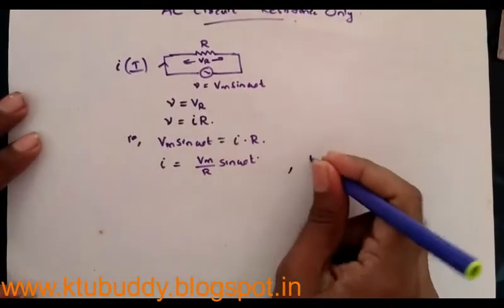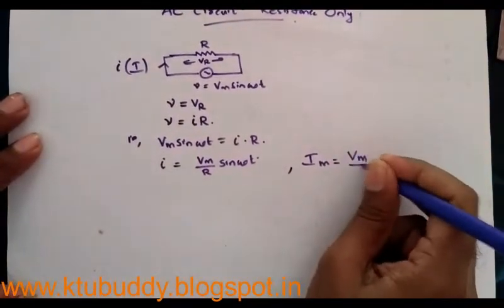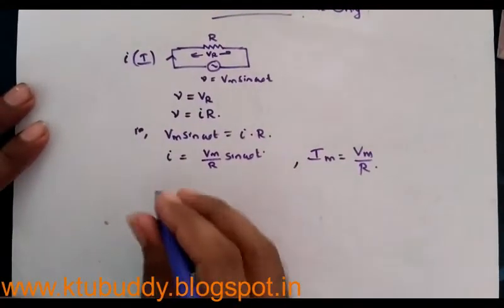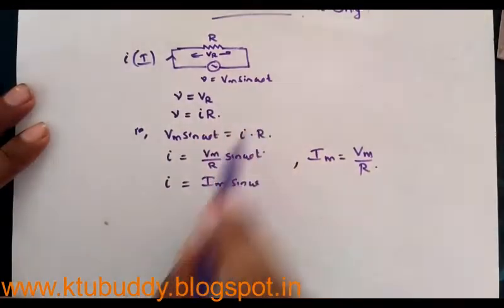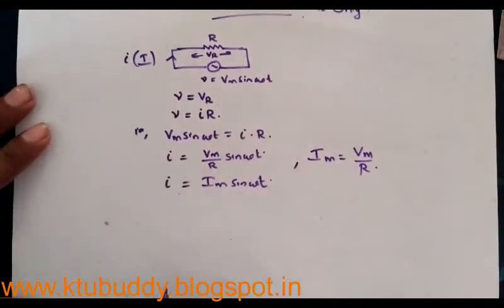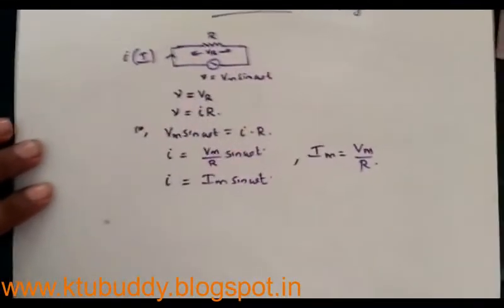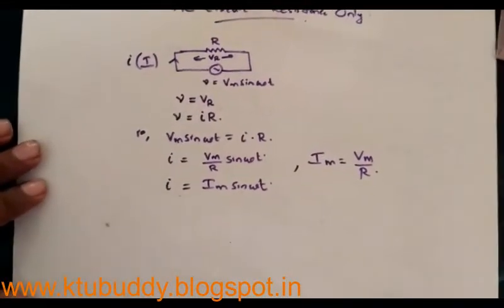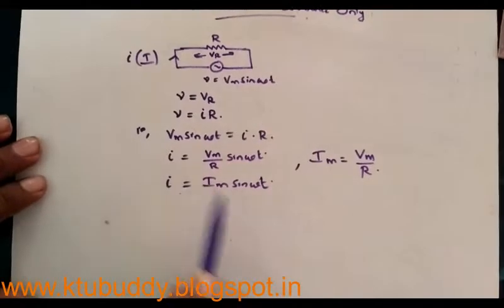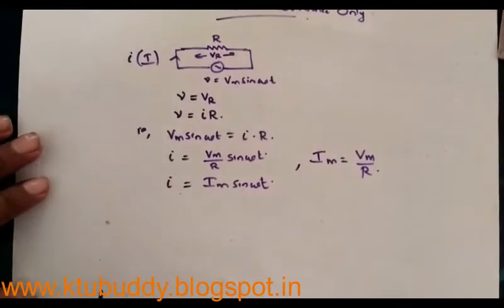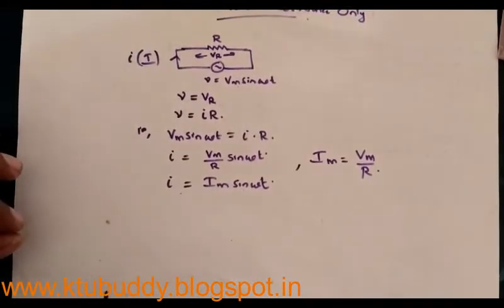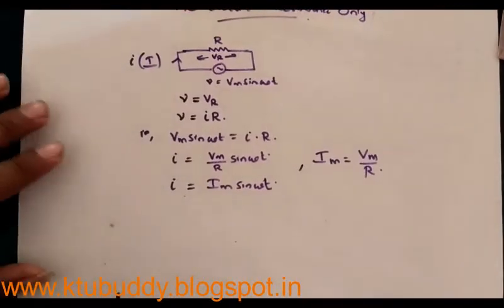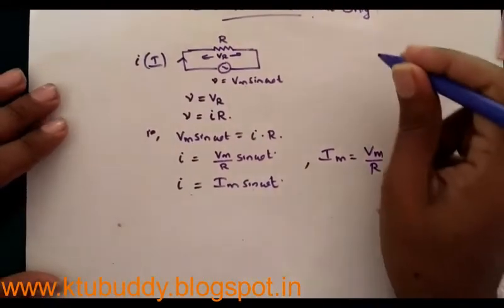Therefore, the maximum value of current Im = Vm / R. The expression for instantaneous current becomes I = Im sin(ωt). Since V = Vm sin(ωt) and I = Im sin(ωt), both voltage and current have the same sine(ωt) term. This means that in a purely resistive circuit, voltage and current are in the same phase — there is no phase difference between voltage and current.